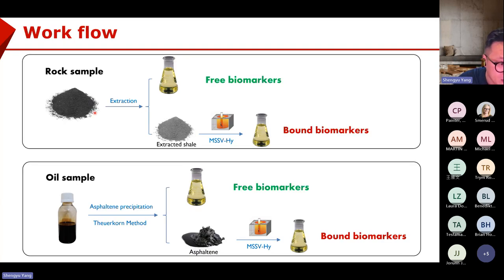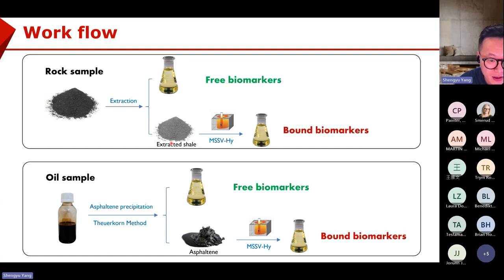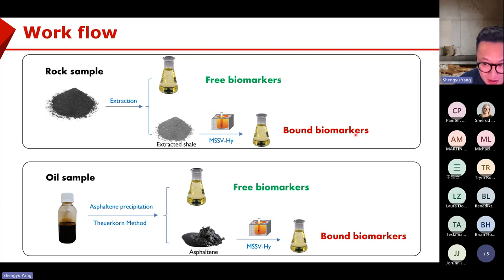A basic workflow for MSO-3 hydrogenation: we deal with rock samples or oil samples. For rock samples, we do the extraction first to get the free biomarkers — we have bitumen first, then asphaltene precipitation, then MPLC to get the aliphatic biomarkers. After extraction, we have free biomarkers and the extracted shale, which has no free biomarkers. Then we heat the sample with MSO-3 hydrogenation to release the bond biomarkers.